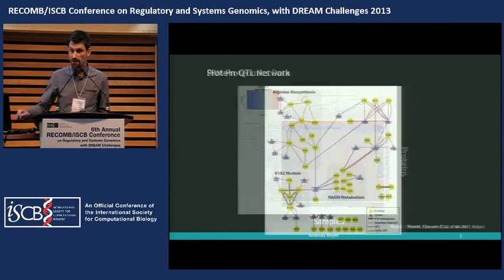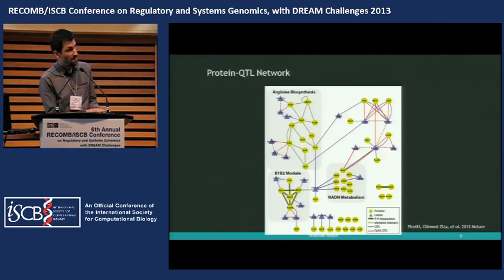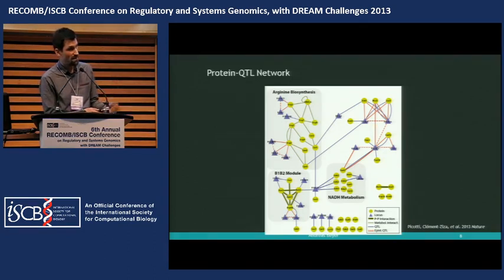The precision of the data gave us very high statistical power. In the resulting protein QTL map, the circles are proteins and triangles are loci. If they're connected, you have a QTL — meaning this locus is affecting the protein level of this protein. The yellow lines are interactions between the proteins, so we also did some network analysis.